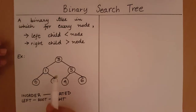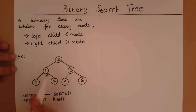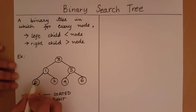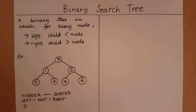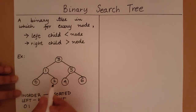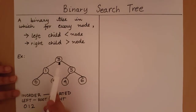Starting with root three, I first go to the left subtree. At root one, I go to the left subtree and print it out because it's a leaf node with no children. I've printed the left subtree of one, now I print one, then I print the right subtree of one which is two. The left subtree of three has been completely traversed, so now I print three.